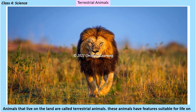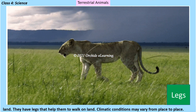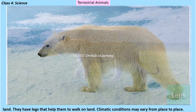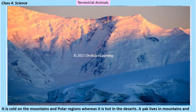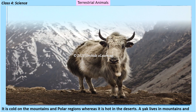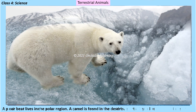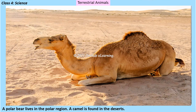Animals that live on land are called terrestrial animals. These animals have features suitable for life on land — they have legs that help them to walk. Climatic conditions may vary from place to place: it is cold in the mountains and polar regions, whereas it is hot in the deserts. A yak lives in mountains, a polar bear lives in the polar region, and a camel is found in the deserts.